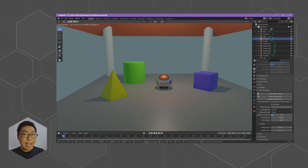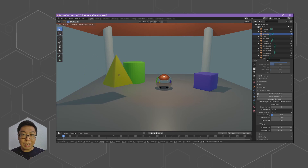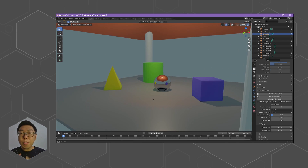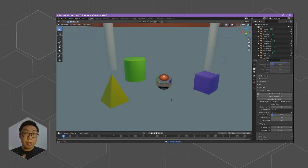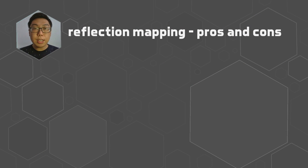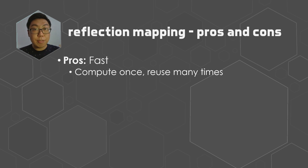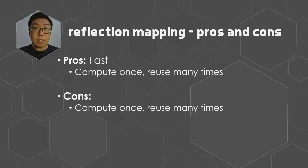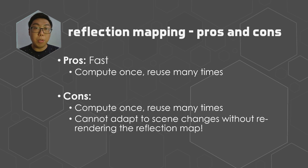Of course, that's not to say this technique is without any disadvantages. Take a look at what happens if I try to modify the scene. Things don't look quite right now. Because the reflection map comes from a static scene, any changes to the physical scene will not be reflected in the reflective mesh. So just like ray tracing, reflection mapping has its pros and cons. The pros: it is very, very fast — you can compute it once and reuse it at essentially no additional computational cost. The disadvantage: you only compute it once, so unless the scene is perfectly static, you're not going to capture any changes unless you redo the reflection map.